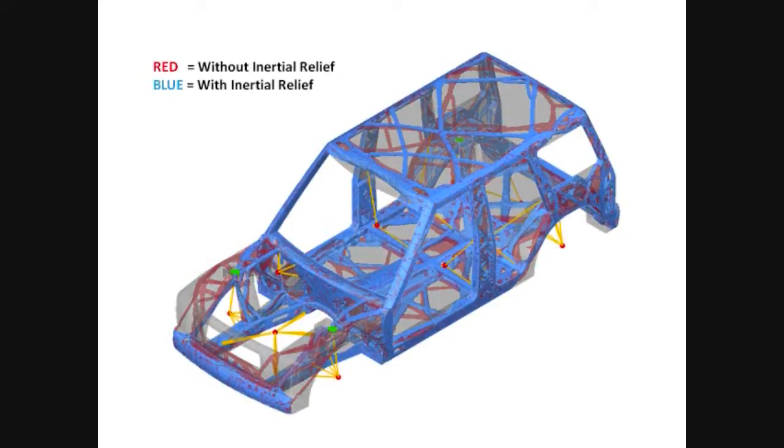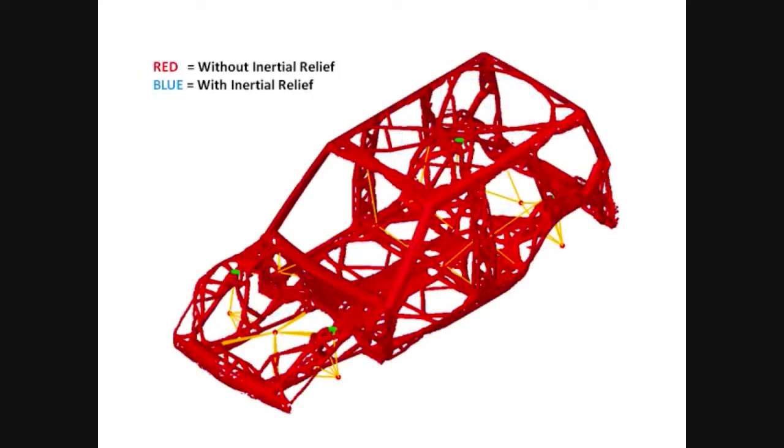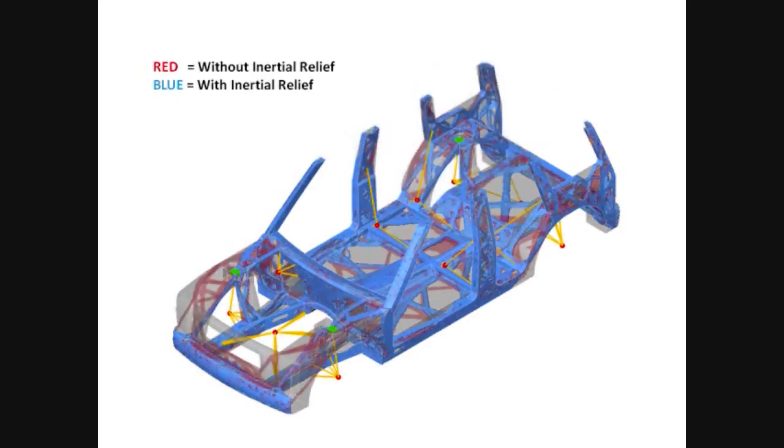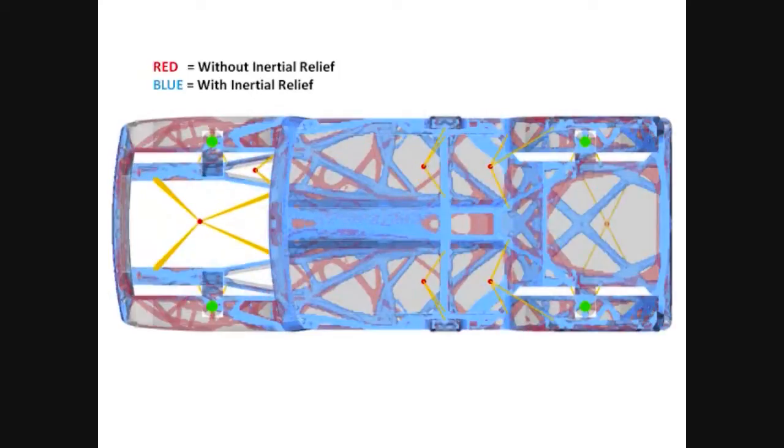On the other hand, in an inertia relief analysis of an unrestrained structure, the applied loads are balanced by inertia forces. These inertia forces are calculated internally using the mass of the structure and rigid body accelerations associated with the external loading.